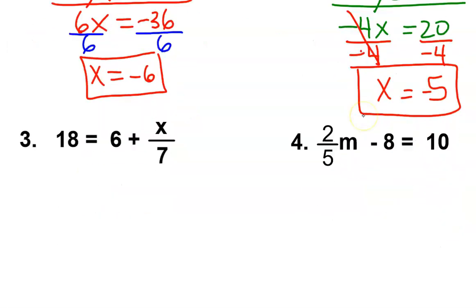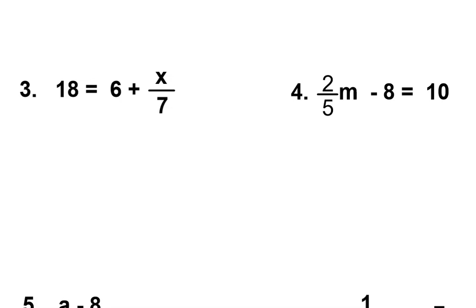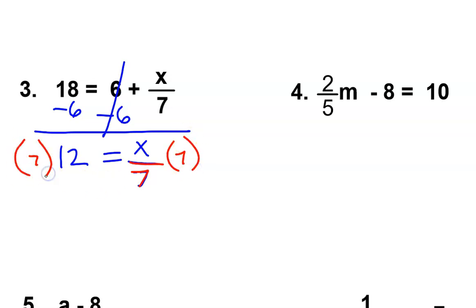Let's take a look at the next two. This is the side I'll be working on. Cross off my inverse. Rewrite my question. Now this time, the coefficient is in the denominator. And the opposite of dividing is multiplying.